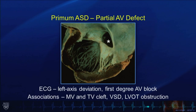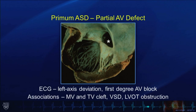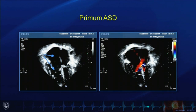One of the pearls for this type of atrial septal defect is that the electrocardiogram characteristically demonstrates left axis deviation and first degree atrioventricular block — a common question on board examinations.